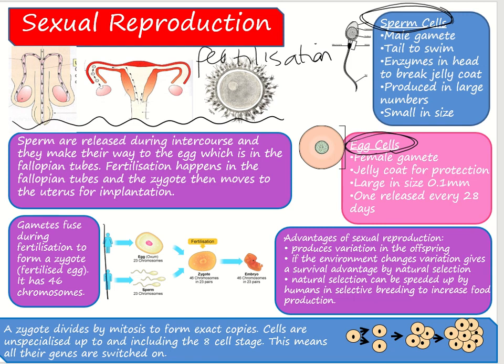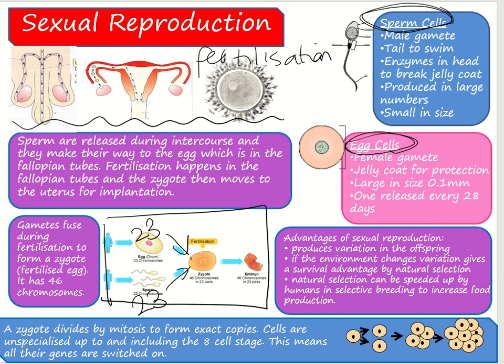When the nuclei fuse, the chromosome number is restored. The egg cell has 23 chromosomes and the sperm cell has 23 chromosomes. When those nuclei fuse, they form 46 chromosomes — that's what we mean by the chromosome number being restored. Just like restoring a building or a painting puts it back to its original, body cells should have 46 chromosomes.